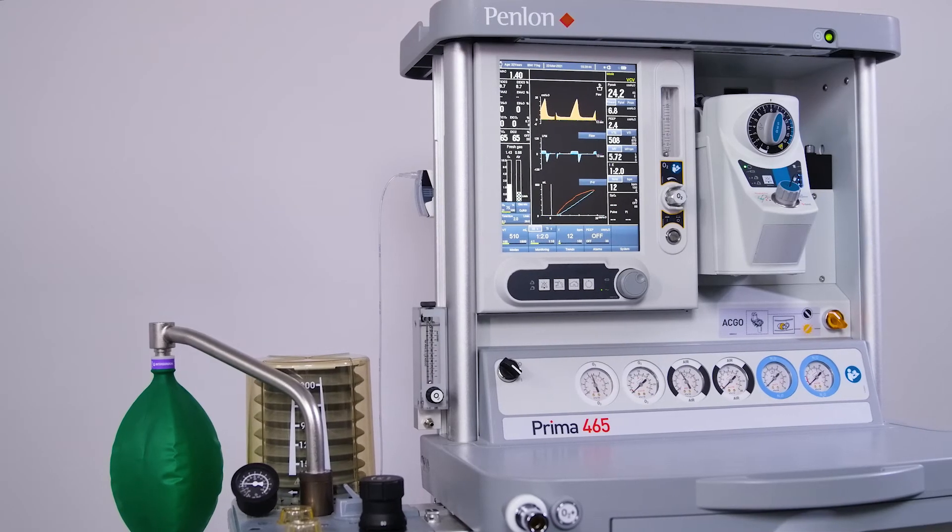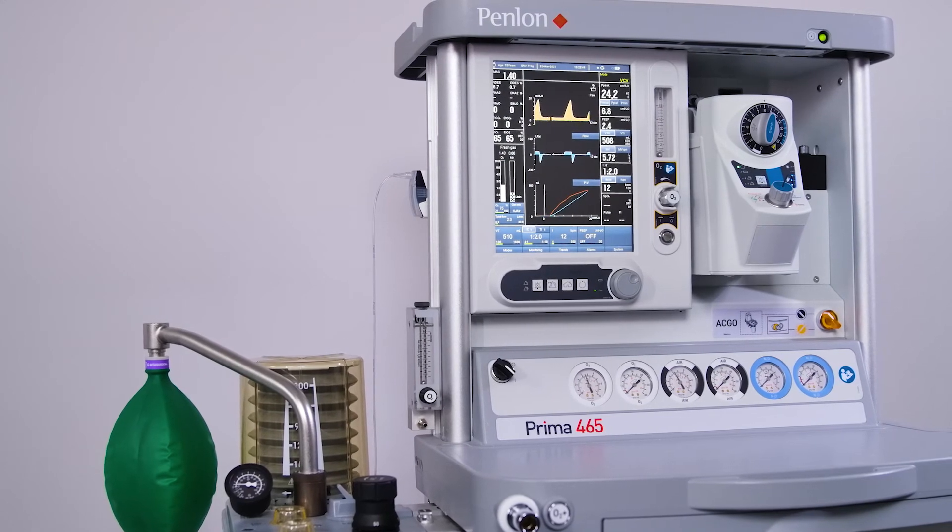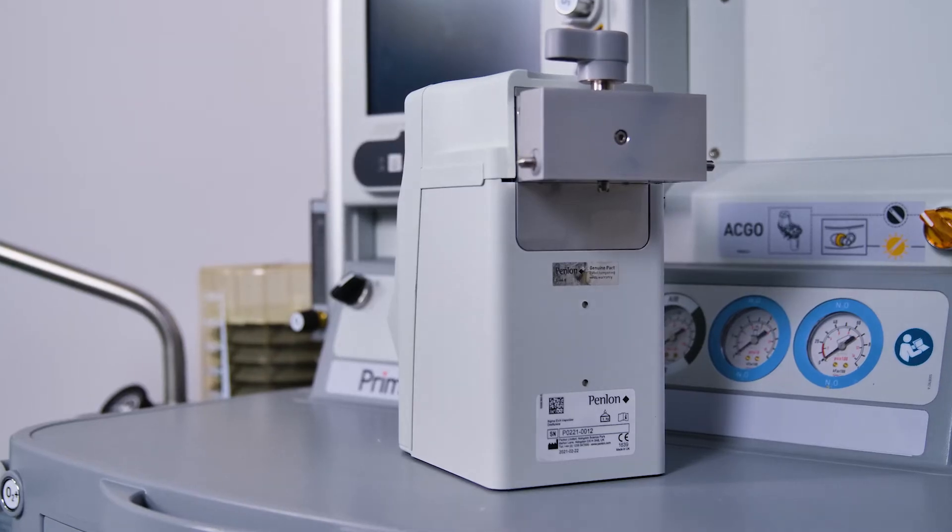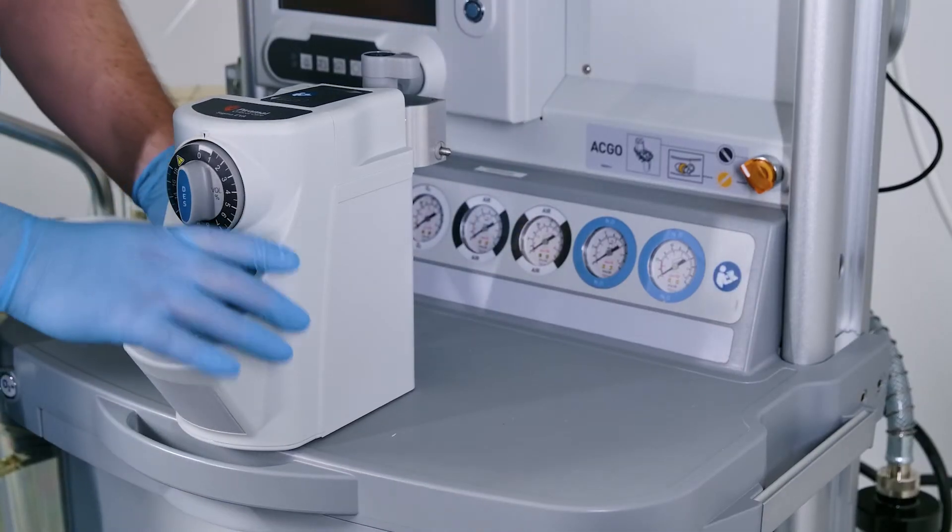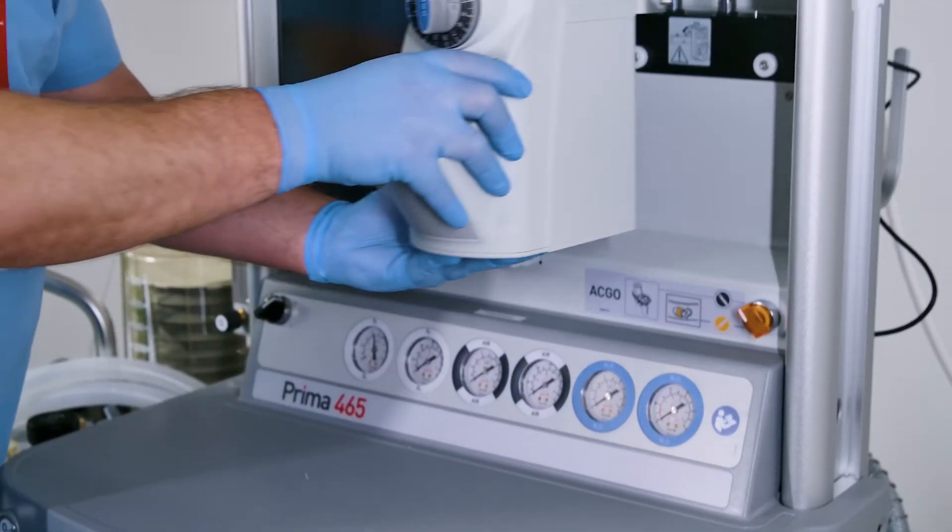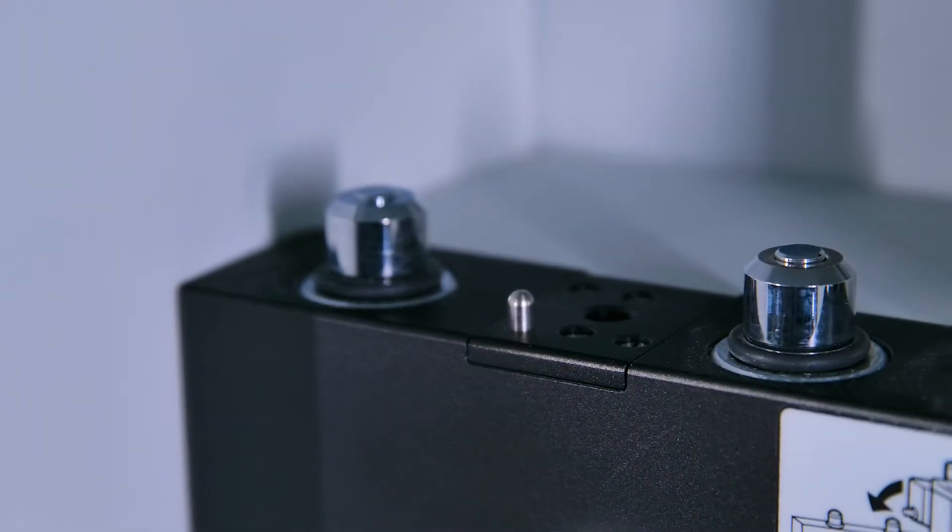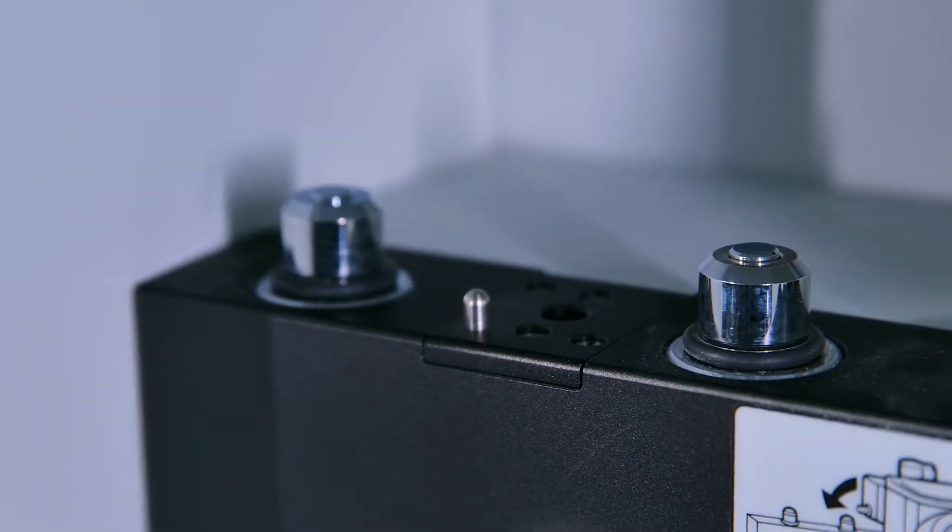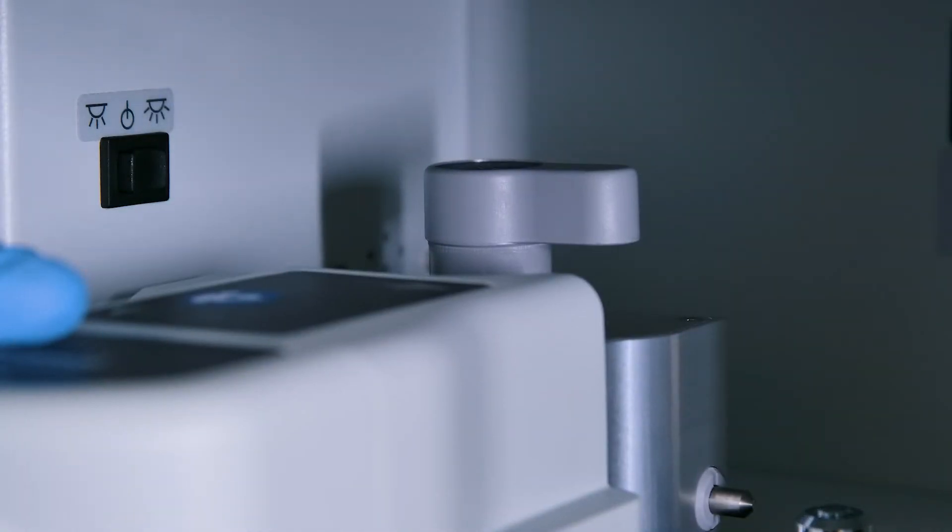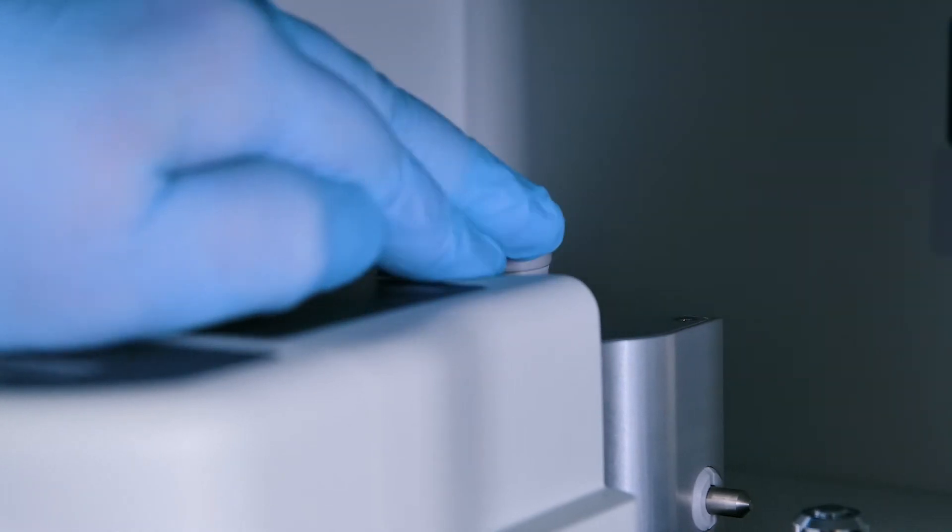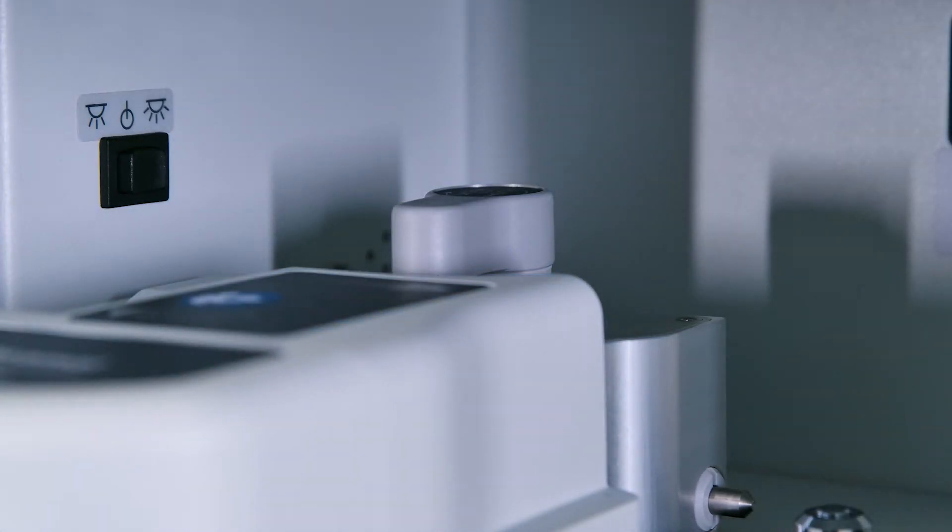Installing the Sigma EVA vaporizer on anesthetic machines with Selectatec or Draeger Auto Exclusion back bar manifolds. Offer the vaporizer up to the manifold. Align the gas connection ports on the underside of the connector block with the valve capsules on the manifold. Lower the vaporizer onto the manifold. Lock into position by pushing the locking lever downwards and rotating clockwise through 90 degrees.